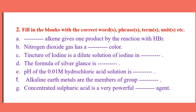Number D: The formula of salvia glands is blank. Number E: pH of the 0.01 molarity hydrochloric acid solution is blank.